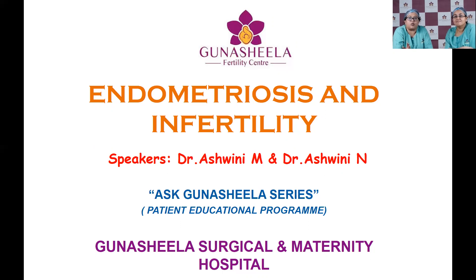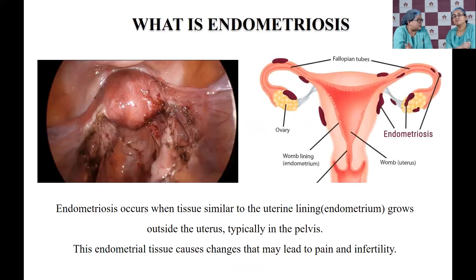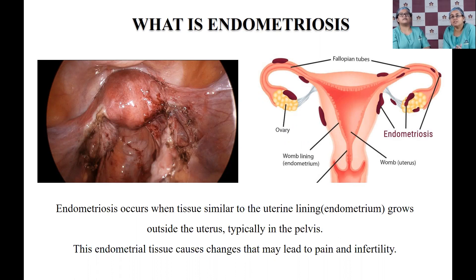Today we would like to throw some light on what endometriosis is and how it results in infertility. The lining of the womb is called the endometrium. For most women, this lining is limited to the inside of the uterine cavity. When this tissue is present outside the cavity of the uterus, we call it endometriosis — an ectopic occurrence of endometrial tissue in the pelvis or even outside the pelvis.